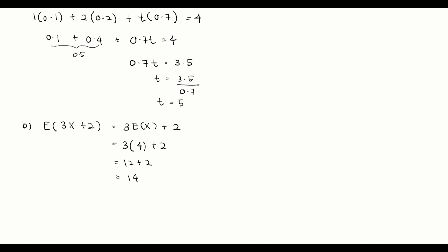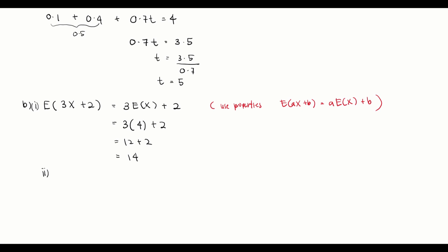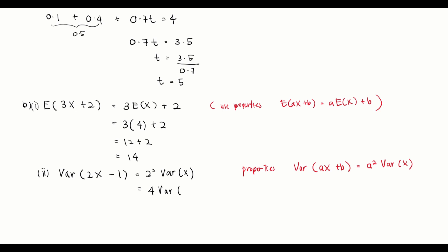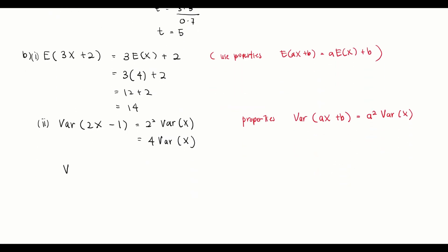That gives us E(3x + 2) = 14. We use the property E(ax + b) = a·E(x) + b. For the second part, we need to find the variance of 2x − 1. Using the variance property: Var(ax + b) = a²·Var(X), so Var(2x − 1) = 2²·Var(X) = 4·Var(X). We need to find Var(X) first.